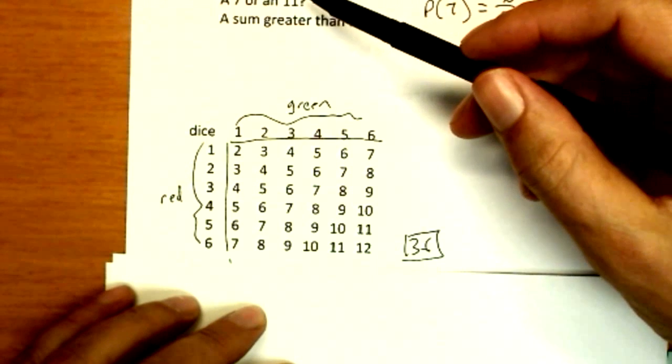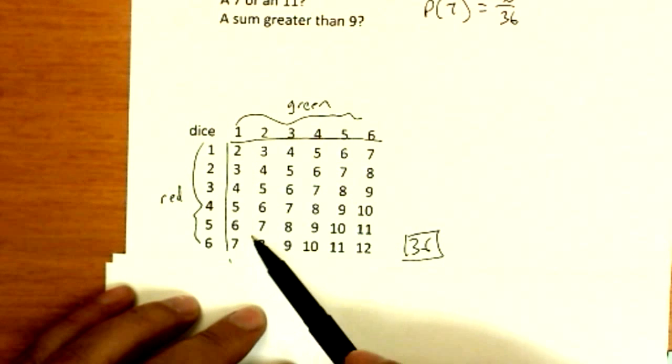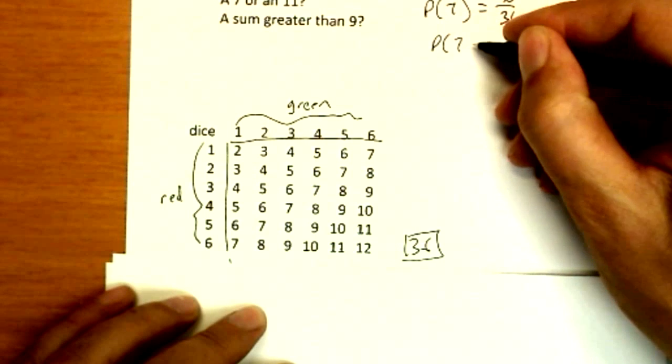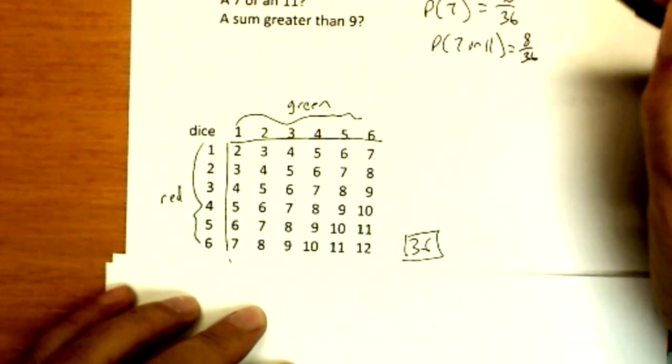A seven or an 11. Well, what of these 36 possible outcomes meet that criteria? Those six plus those two. So probability of seven or 11 is going to be eight out of 36.